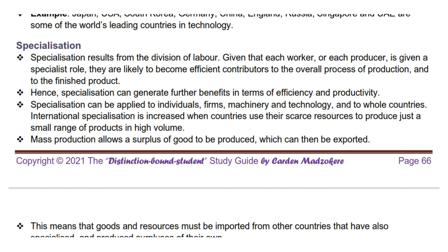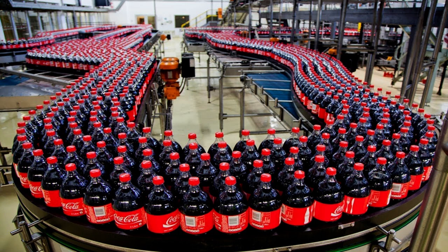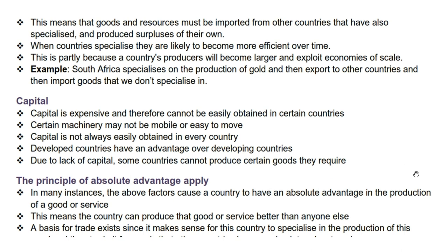Next we have specialization as a supply reason for international trade. Specialization results from the division of labor. Given that each worker, or each producer, is given a specialist role, they are likely to become efficient contributors to the overall process of production and to the finished product. Hence, specialization can generate further benefits in terms of efficiency and productivity. Specialization can be applied to individuals, firms, machinery and technology, and to whole countries. International specialization is increased when countries use their scarce resources to produce just a small range of products in high volume. Mass production allows a surplus of goods to be produced, which can then be exported. This means that goods and resources must be imported from other countries that have also specialized and produced surpluses of their own.